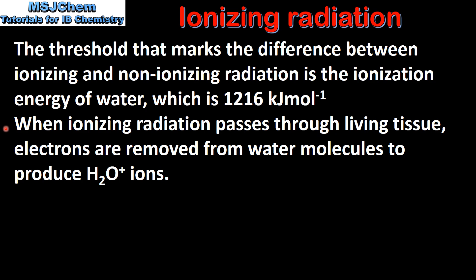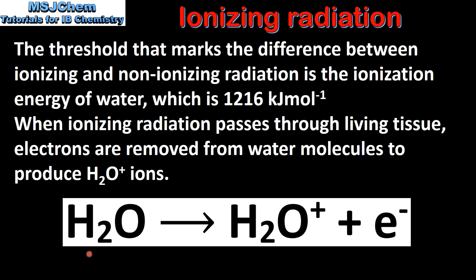When ionizing radiation passes through living tissue, which contains a high percentage by mass of water, electrons are removed from water molecules to produce H2O+ ions. In this equation we can see the ionization of a water molecule to produce a H2O+ ion and an electron.